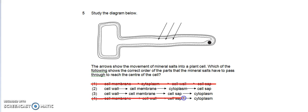and option four, because we know the first part is the cell wall. So after the cell wall, the mineral salts will need to go through the cell membrane, which is the second layer here. So cell membrane—both are possible answers.